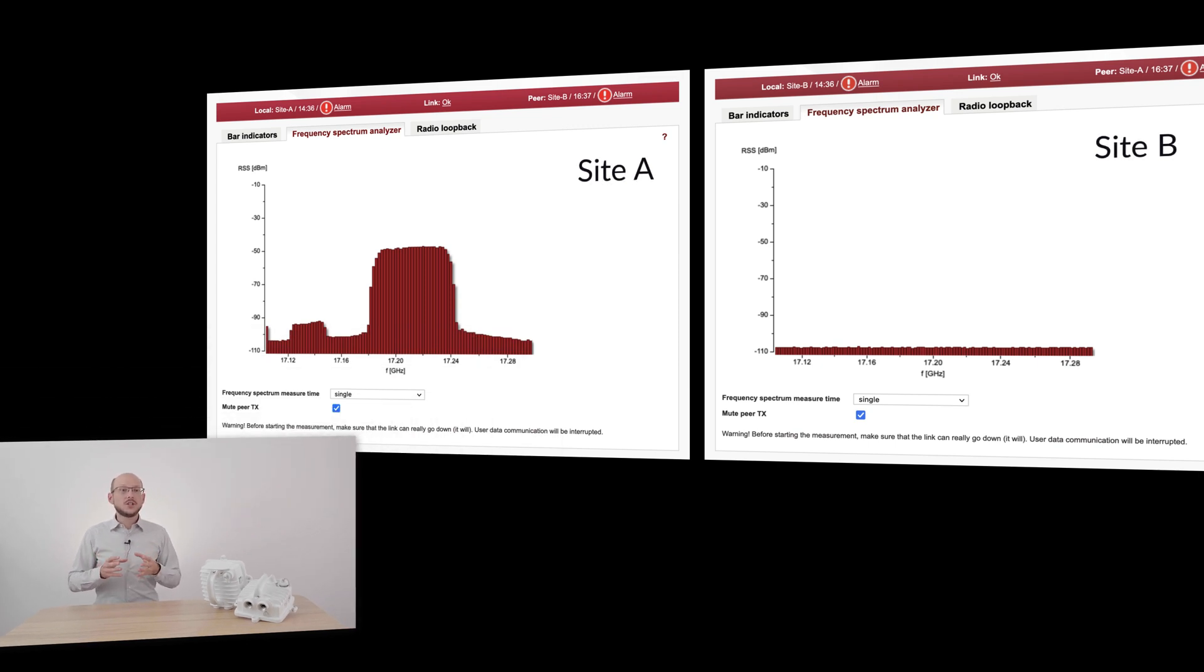This will give you an idea which channels are free of interference. In our case, side B shows no interference but side A has a strong signal in the middle and weaker one in lower part of the spectrum.